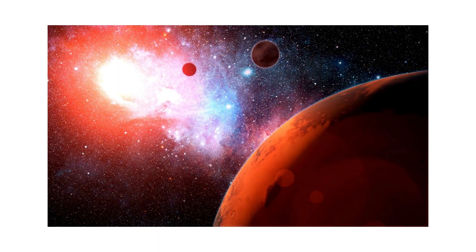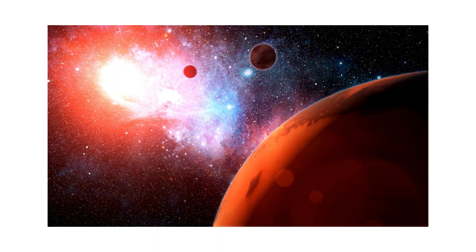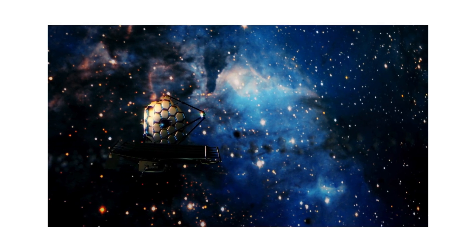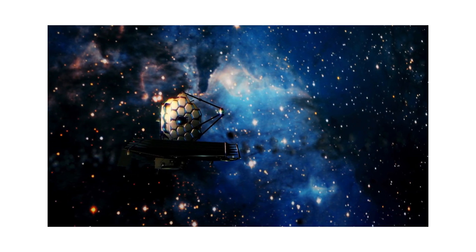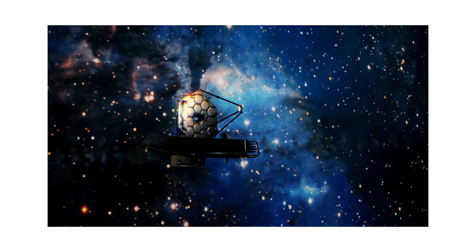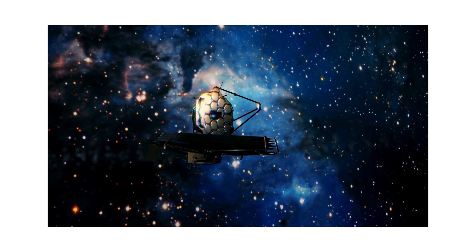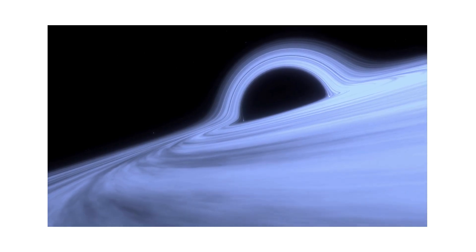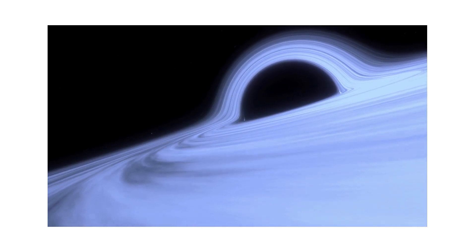Astronomers have identified several candidates for rogue black holes moving through the Milky Way. One example is a stellar mass black hole detected by the way its gravity bends the light of background stars, a phenomenon called microlensing. Such objects are dark, silent, and nearly impossible to track unless they pass directly in front of stars.